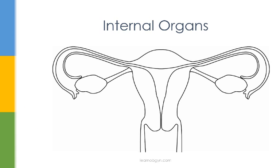Now we'll be talking about the internal organs. To briefly give you an overview, we have the vagina, cervix, uterus, fallopian tubes, and finally the ovaries.